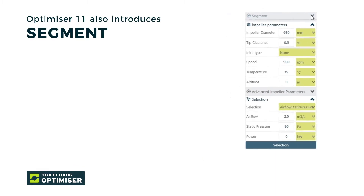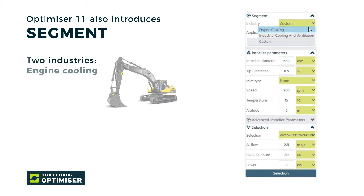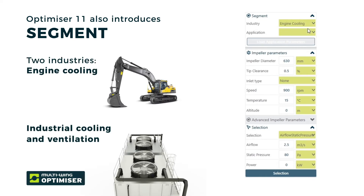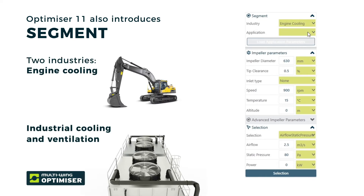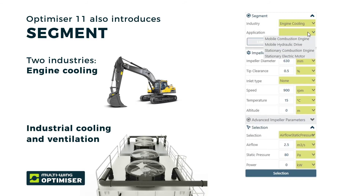Optimizer 11 also introduces Segment, a new tool to help you select the correct impeller for your solution. Applications are divided into two industries: engine cooling and industrial cooling and ventilation, or HVAC.